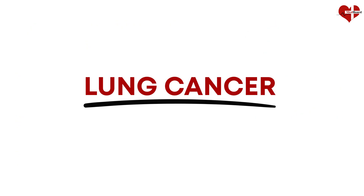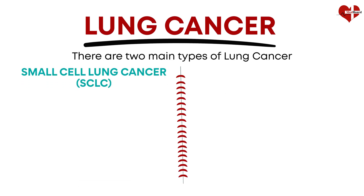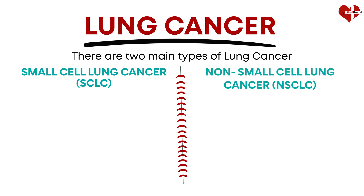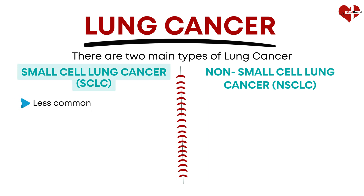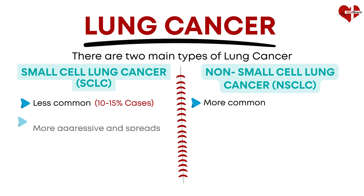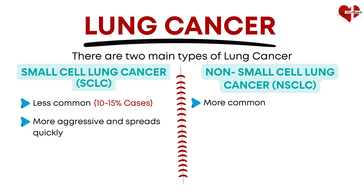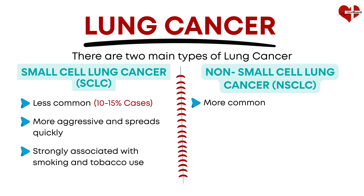There are two main types of lung cancer: small-cell lung cancer and non-small-cell lung cancer. These two types are named based on the appearance of the cancer cells under a microscope. Small-cell lung cancer is less common, accounting for about 10 to 15% of all lung cancer cases. It is more aggressive and tends to spread quickly to other parts of the body, and is strongly associated with smoking and tobacco use. It is often diagnosed at a more advanced stage.